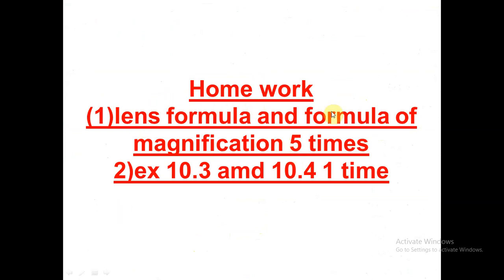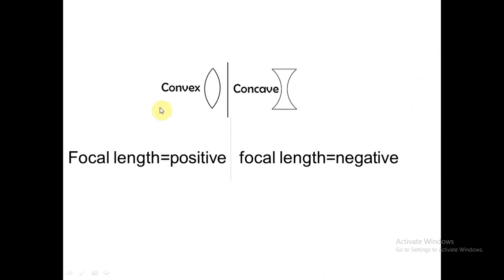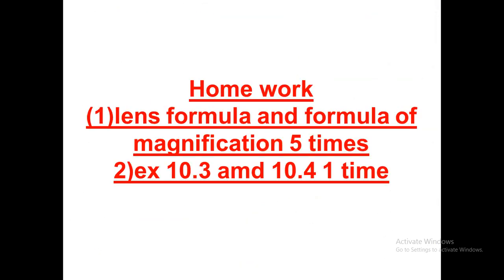Today's homework: write the lens formula and magnification formula 5 times each. Write examples 10.3 and 10.4 once each. Also write and memorize: convex lens focal length is positive, concave lens focal length is negative - write these 5 times each. This will help clear your basics and you will remember the concepts. Read the theory portion as well, and if you have any doubt, ask on WhatsApp. Thank you.